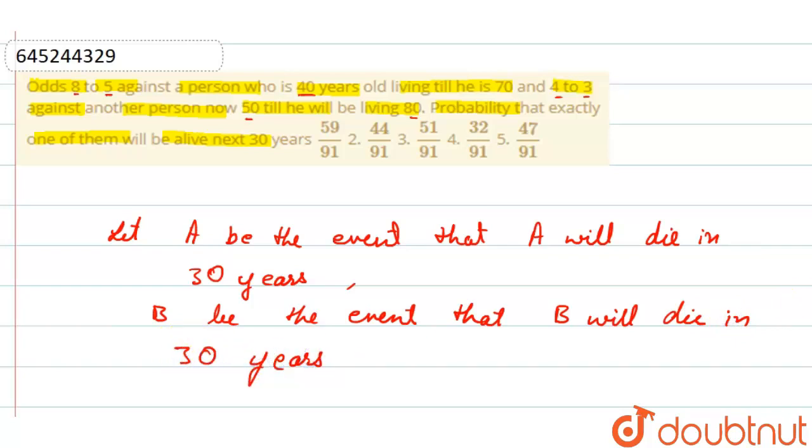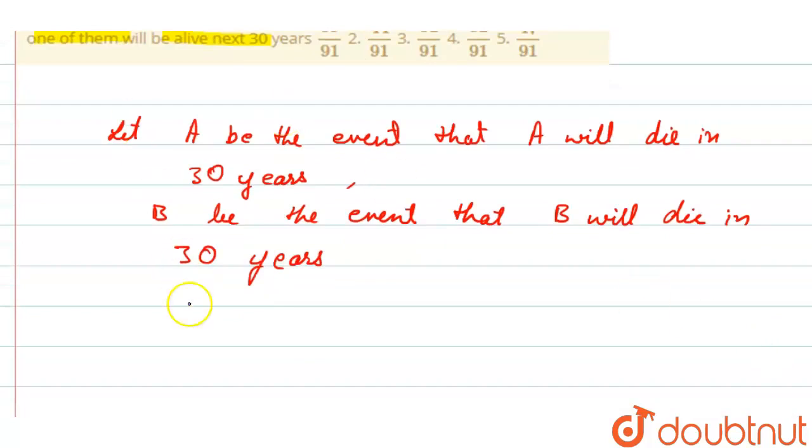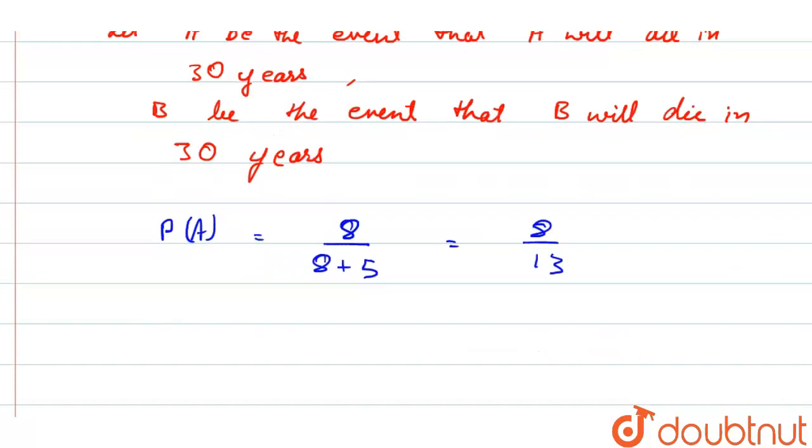Then probability of A, that is P(A), odds are given as 8 to 5, so 8 by 8 plus 5, that is 8 by 13. And probability of B, odds given as 4 to 3, so 4 by 4 plus 3, that is equals to 4 by 7.